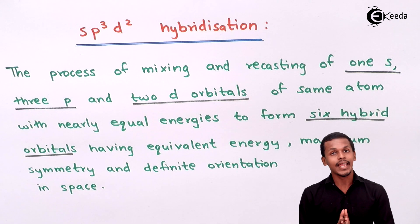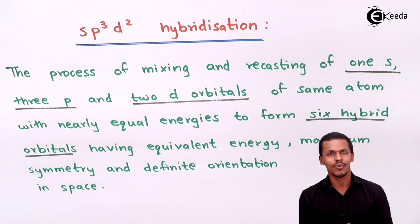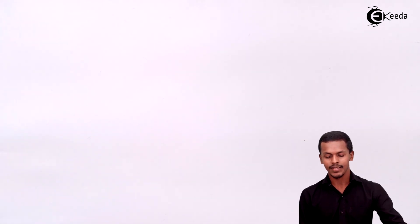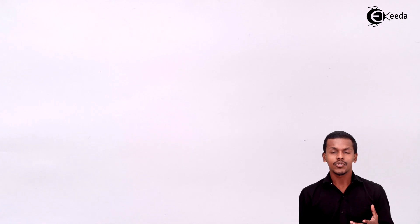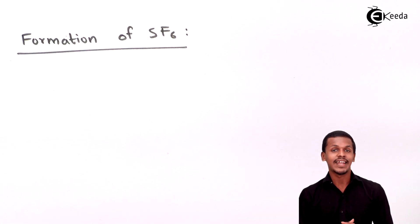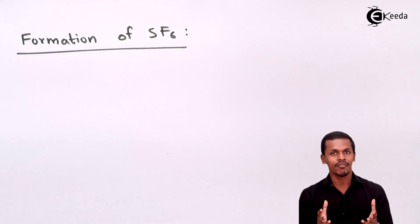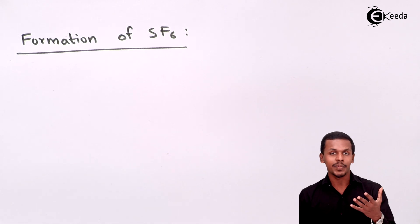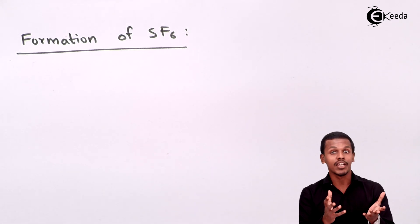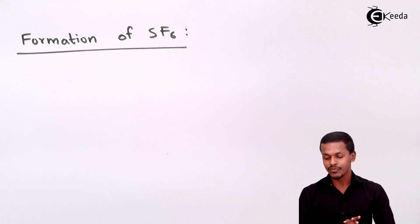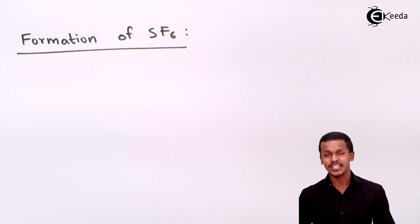Now let us look at an example to see which molecules show this hybridization and how bonds are formed. We are talking about the formation of sulfur hexafluoride (SF6). Sulfur is the central atom of the molecule, and that is why it will be exhibiting hybridization of its atomic orbitals. Sulfur's atomic number is 16.